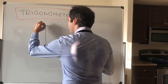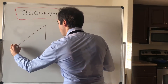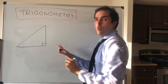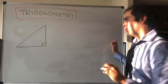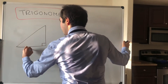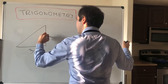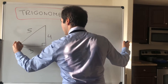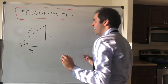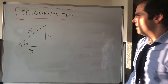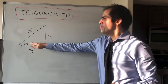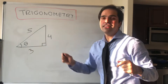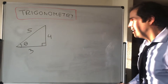Suppose you have a right triangle — and it's important that it's right — with sides 3, 4, and 5. Suppose this is an angle theta. Then there are many different ways of relating the sides with theta.